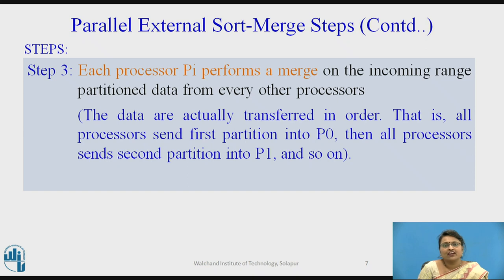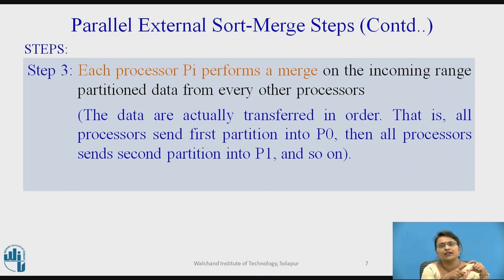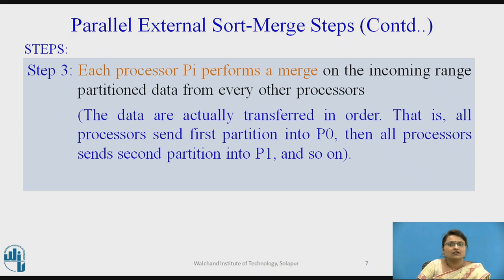The third step is the actual parallel technique: each processor pi performs a merging. The data is already sorted in different disks. For example, processor p0 collects from every disk all records within p0's salary range — say below 14,000 — and merges them. All processors send their first partition to p0, second partition to p1, and so on. The data is transferred in order based on the range vector.